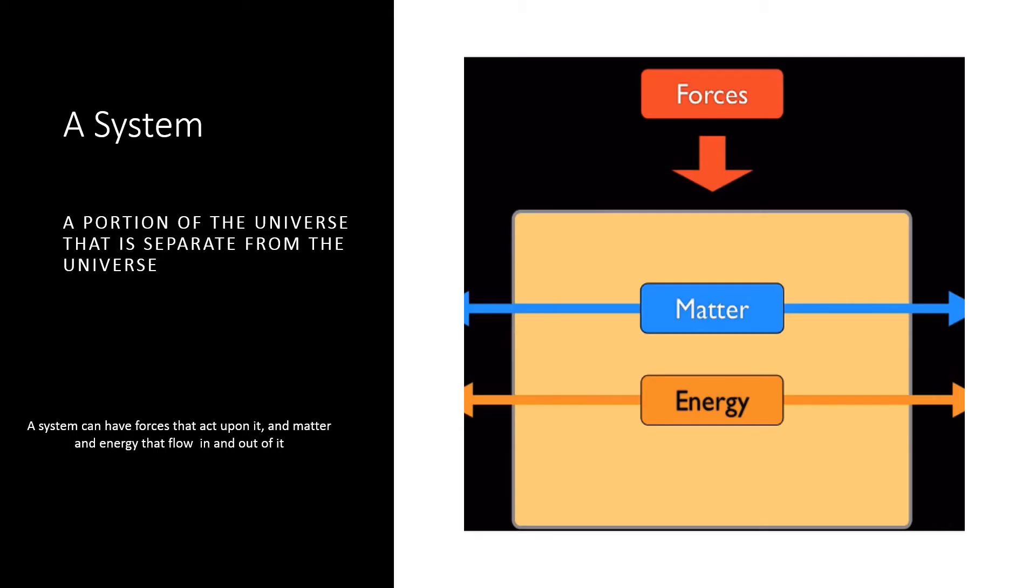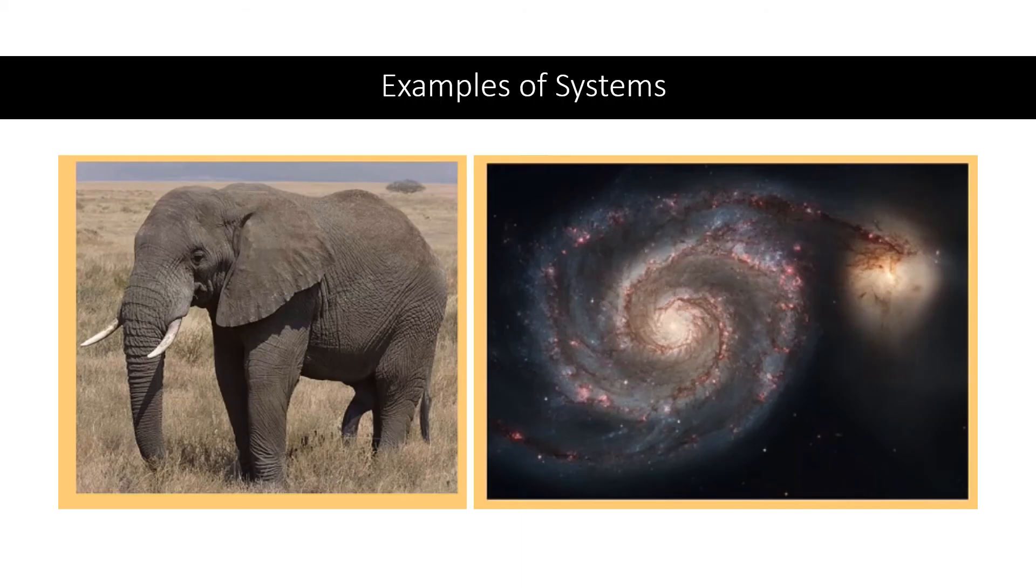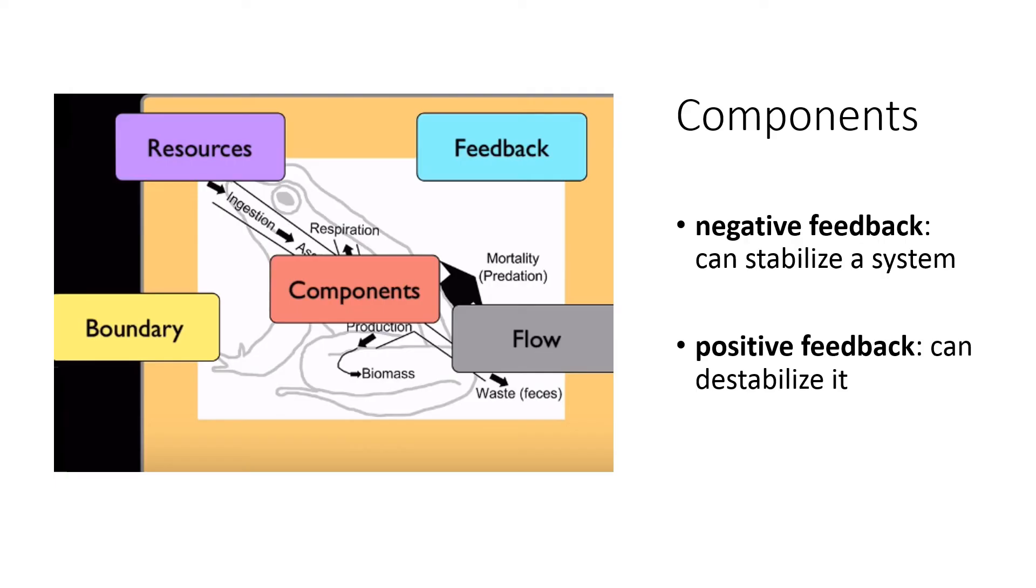If you're modeling a system, you're modeling a portion of the universe that's separate from the entire universe. This system can have forces that are acting upon it and matter and energy that flow in and out of it. In the last slide, we looked at the solar system as an example. Here are two other examples: an elephant on the left and a galaxy on the right.